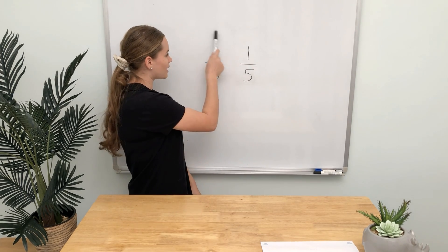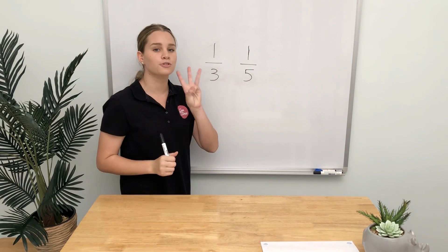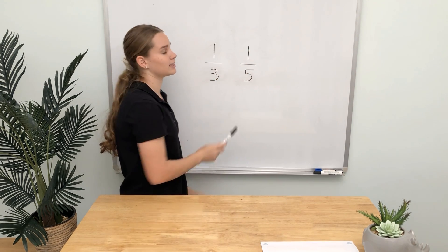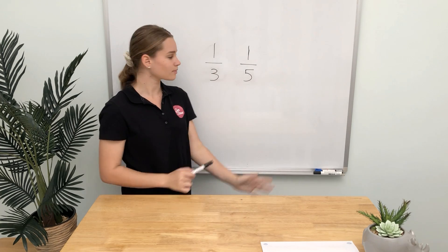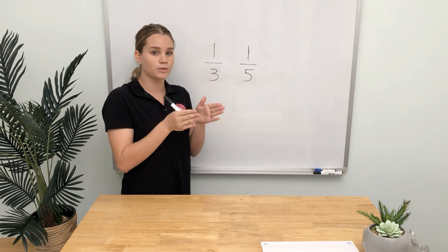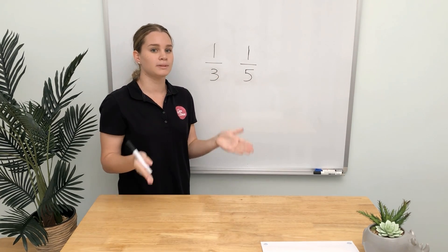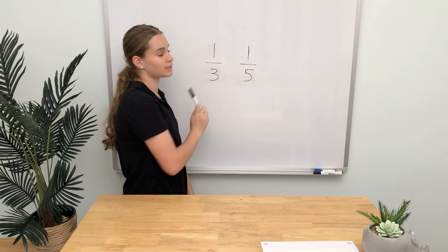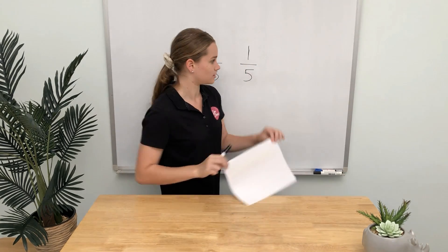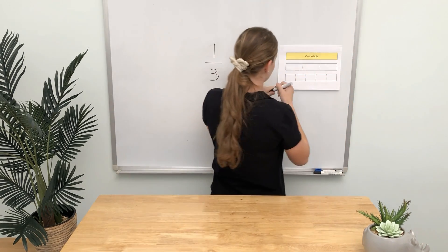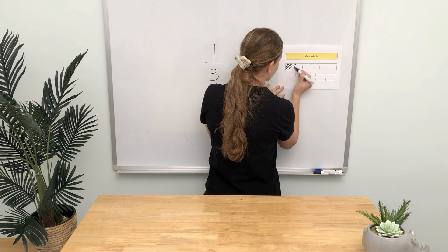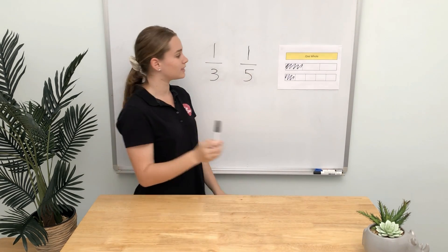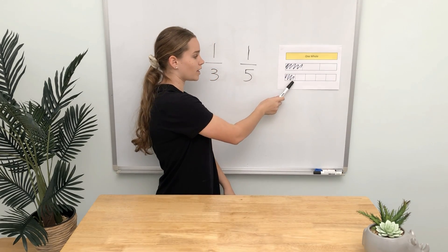The denominator in this fraction tells us there are 3 equal parts of a whole. The denominator in this fraction tells us there are 5 equal parts of a whole. With this one, we know that there are fewer parts in the whole, which means each part is bigger, so we know this fraction is greater. We have one-third and one-fifth — we can easily tell that one-third is greater than one-fifth.